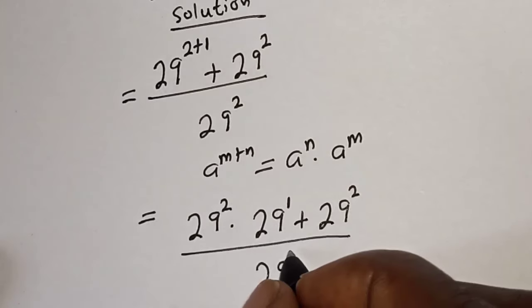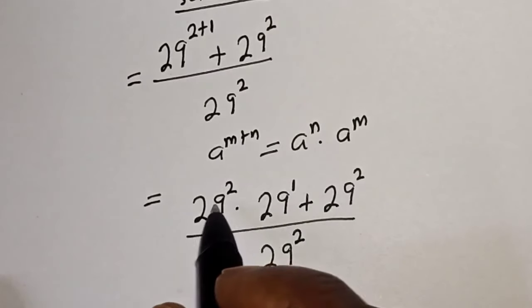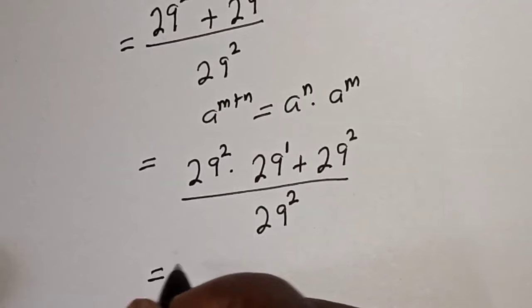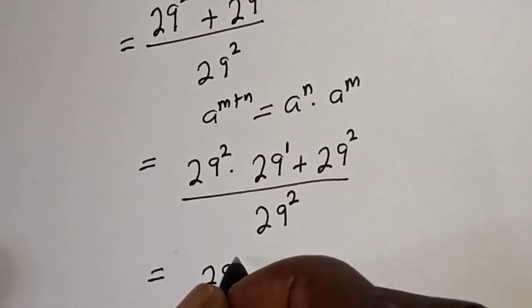Here, 29 squared is common, so let's factor it out. This equals 29 squared